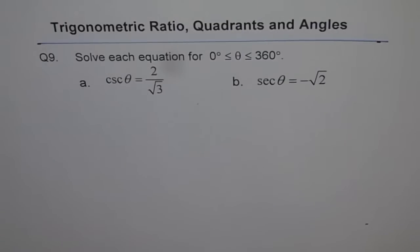Trigonometric ratio, coordinates and angles. Question 9. Solve each equation for theta is greater than or equal to 0 degrees and less than or equal to 360 degrees.